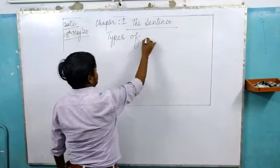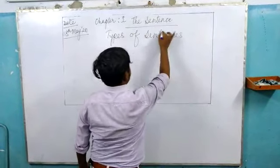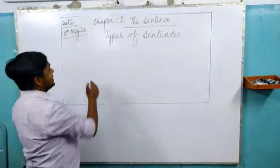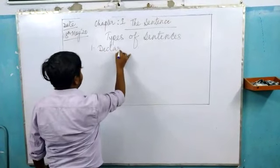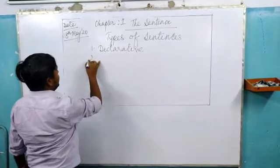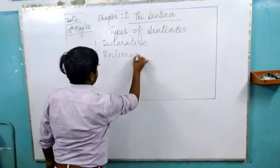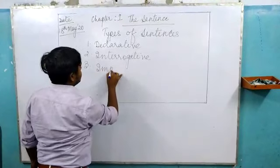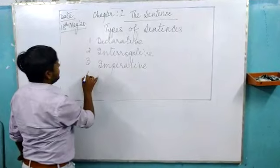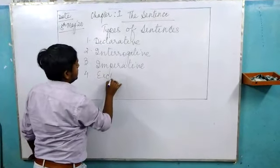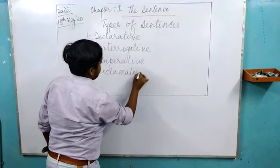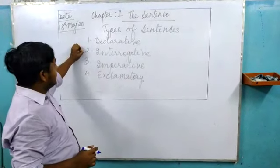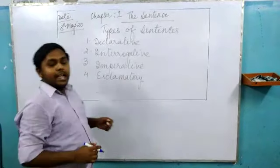According to the expressions used in the sentence, the sentences give different types of expressions. We divide the sentences into four types. First one is declarative, second one is interrogative, third one is imperative, and fourth one is exclamatory. So these are the four types of sentences.